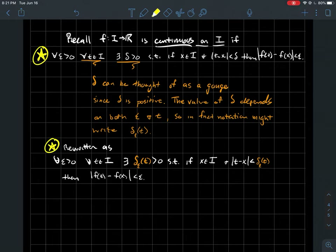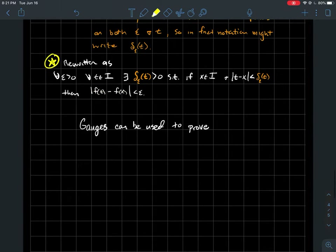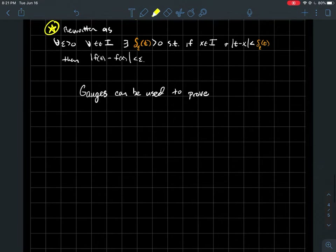The definition of continuity from the gauge perspective is: for every positive epsilon and for every input t, you can find a gauge delta_epsilon(t) such that if x is in your interval I — the domain of your function f — and the distance between t and x is less than the output of the gauge at t, then the outputs of my function at t and x should be within epsilon of each other.